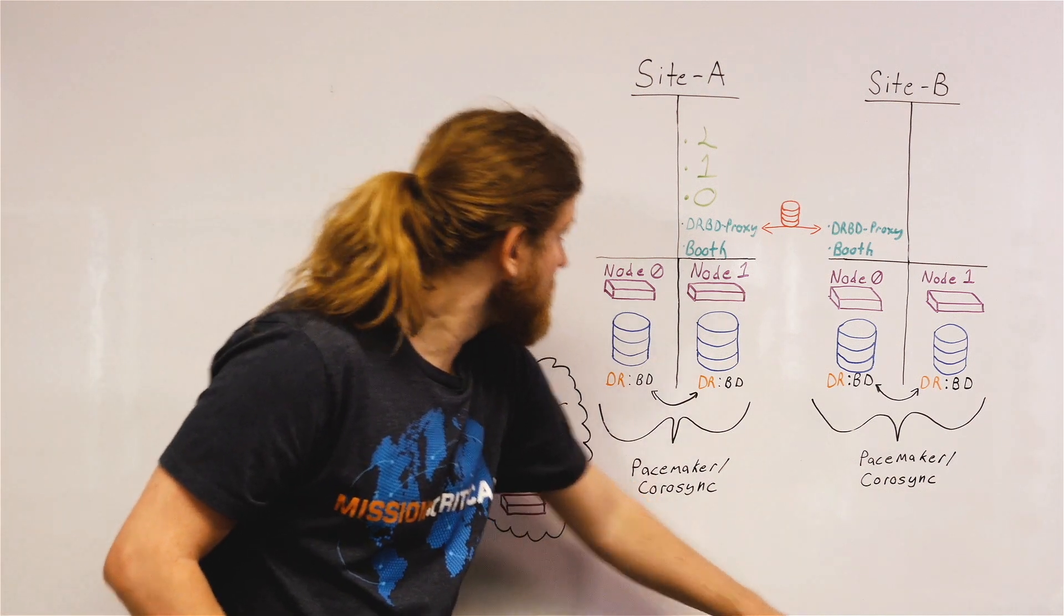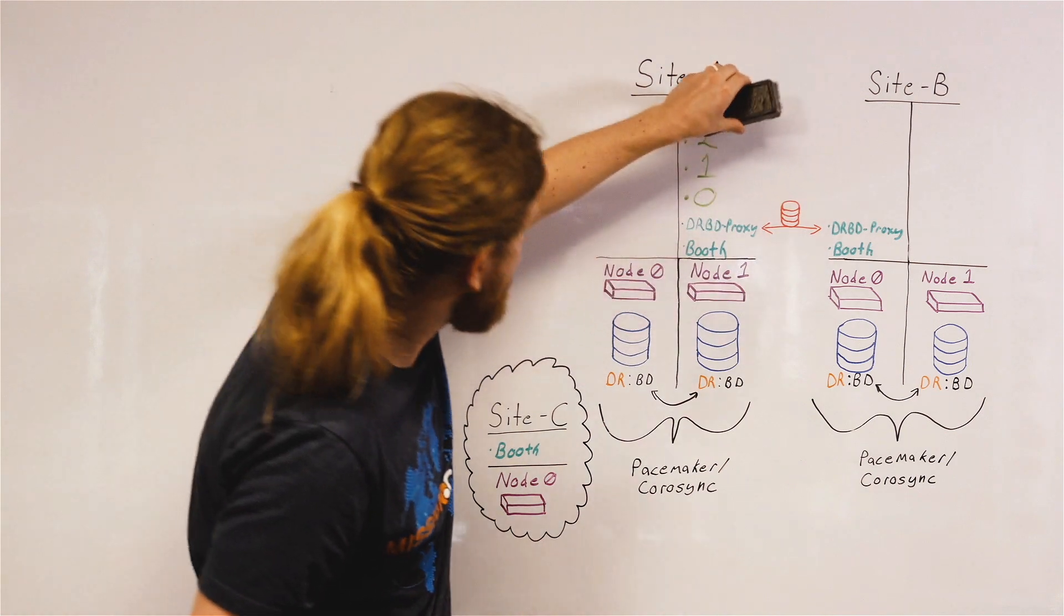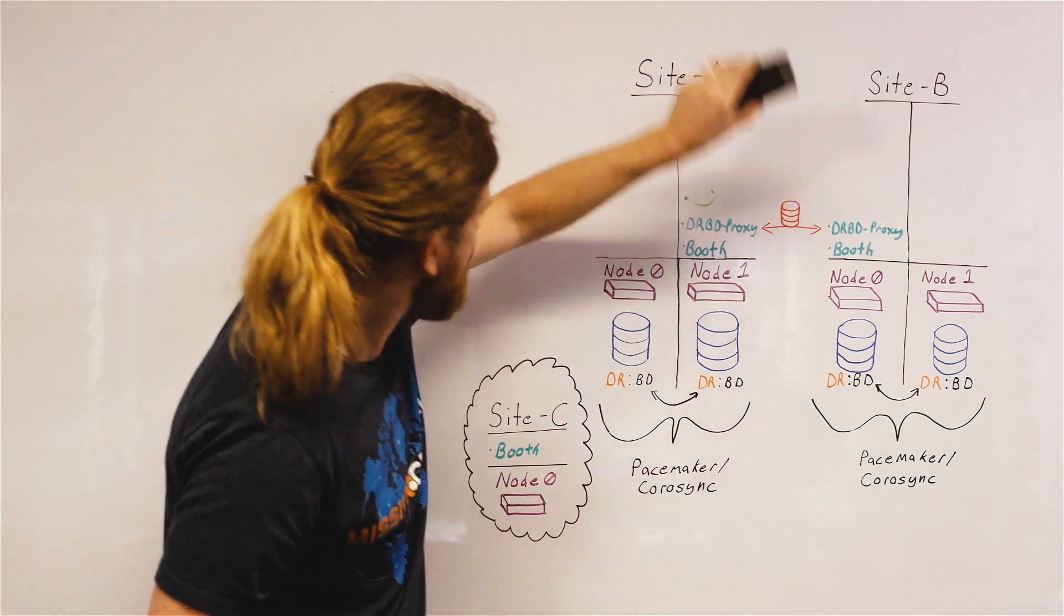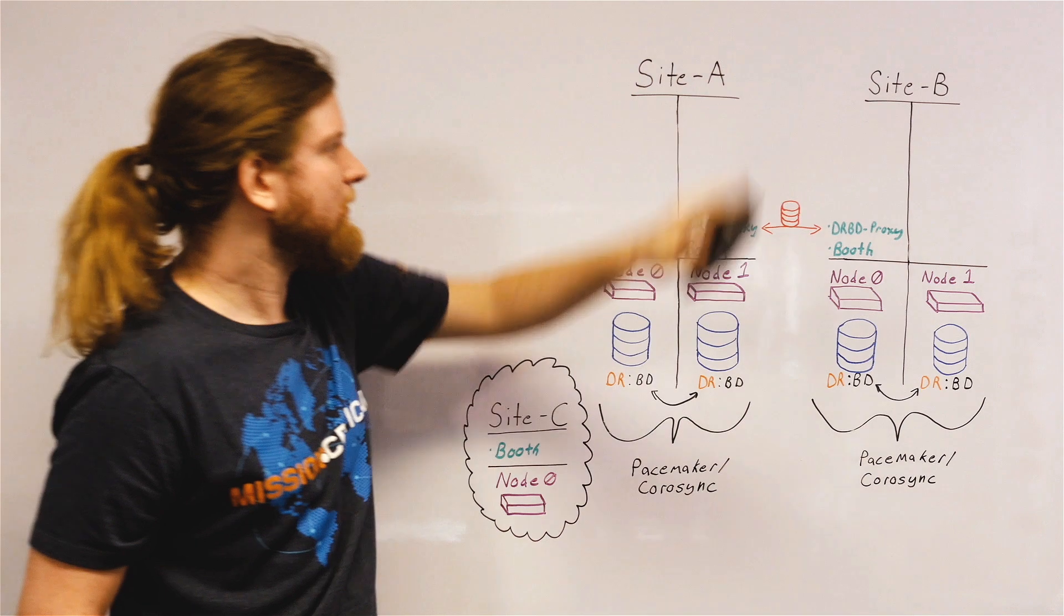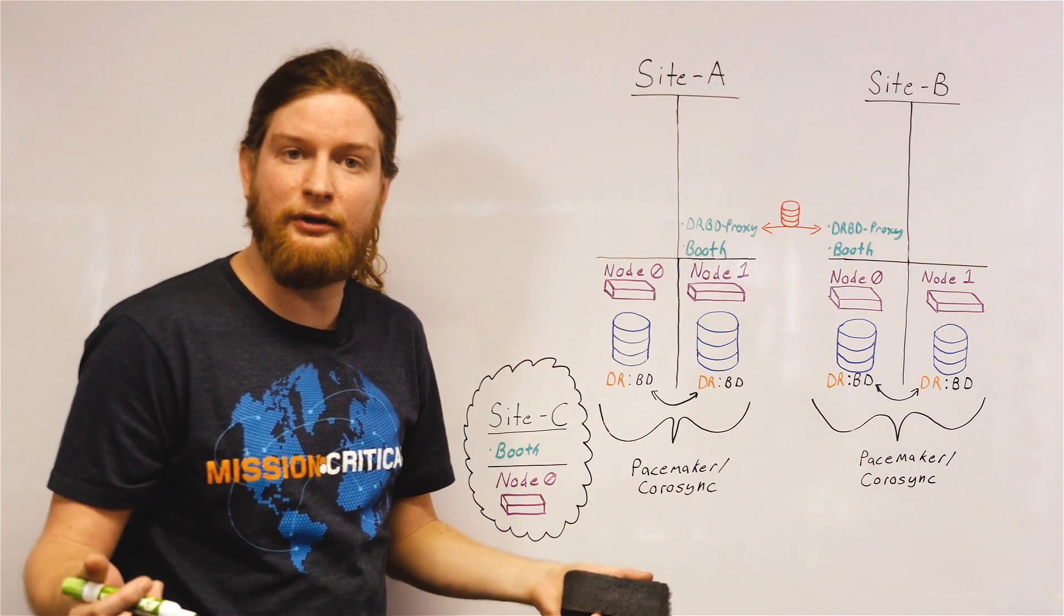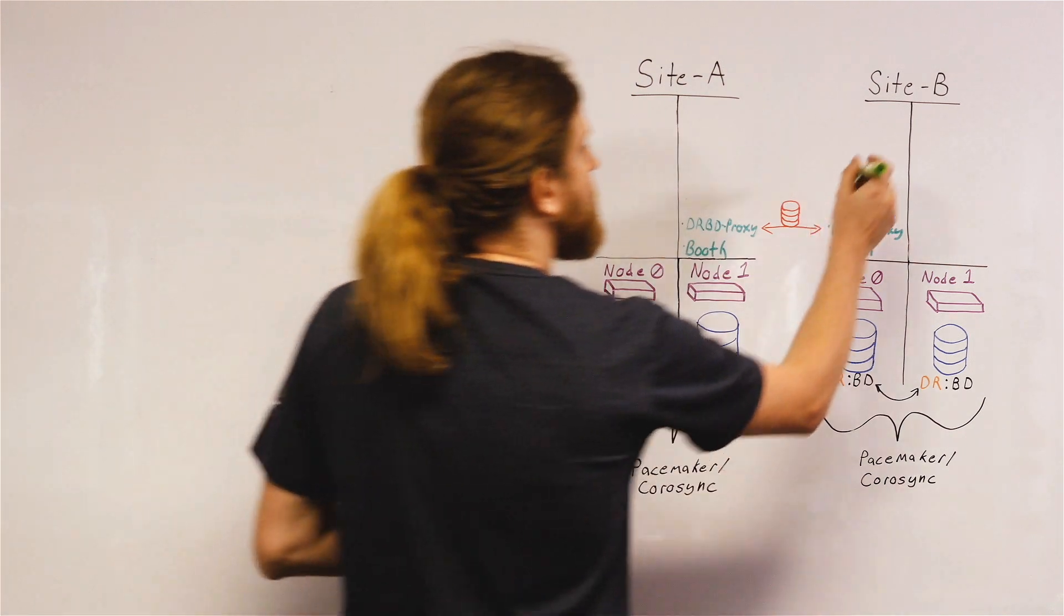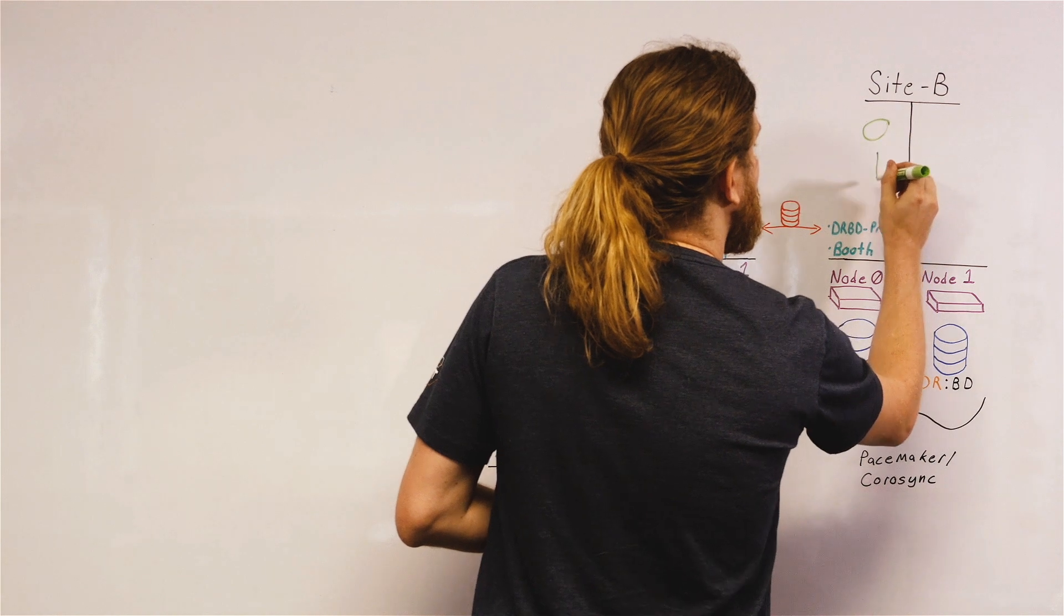So if services 0, 1, and 2 were to completely fail in site A, then we would need some way to run them over on the other site. So we would run them over on site B as 0, 1, and 2.